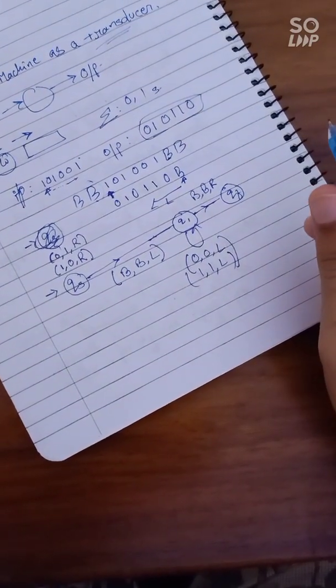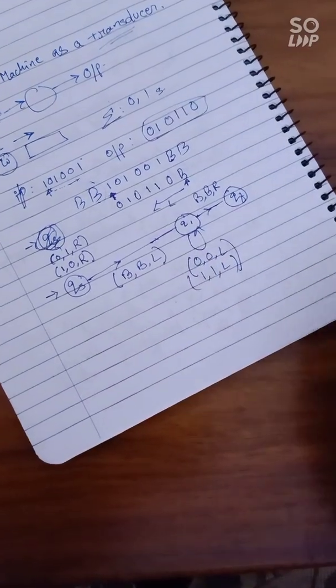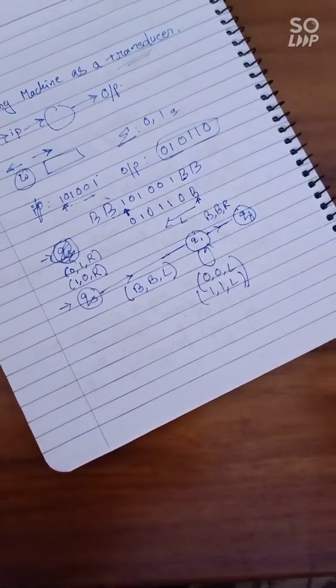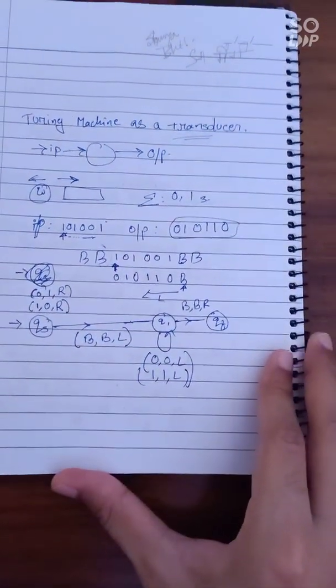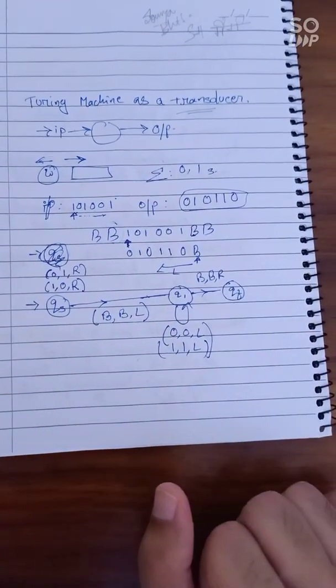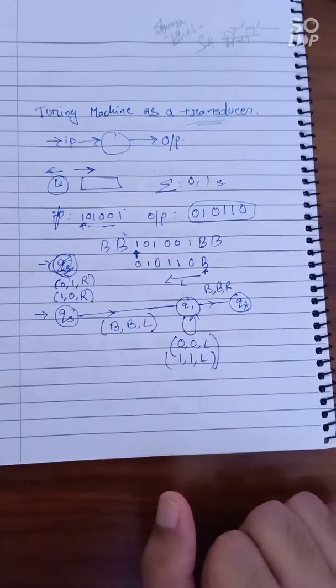So yeah, that's it. That's the Turing machine for one's complement and the example of Turing machine being a transducer.